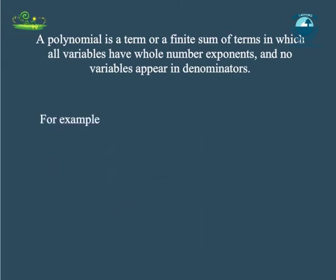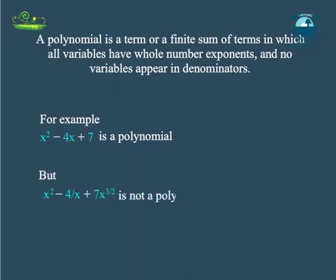For example, x square minus 4x plus 7 is a polynomial. But x square minus 4 upon x plus 7x to the power 3 by 2 is not a polynomial, because of its second term involves division by the variable x and also because its third term contains an exponent that is not a whole number.